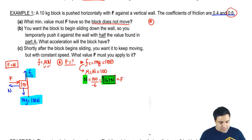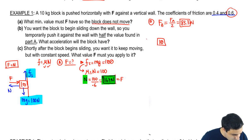Part B says you want the block to begin sliding down the wall. So you temporarily push against with half the value found in part A. What acceleration will it have? The force in part B is going to be half of the force in part A, so it's 167 divided by 2, and that is 83.3. Very similar setup. I got a 10, but now I'm pushing with a force of 83.3, which means there's a normal pushing back that is also 83.3. I got the wall over here, and there's an mg pulling down. mg is 100 as well. And I have a friction going up.